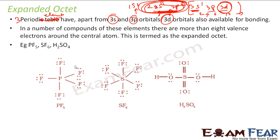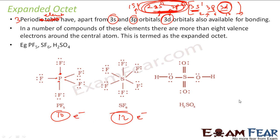For example, PF5 has 5 × 2 = 10 electrons on the phosphorus central atom, and it is happy with that — its configuration is 3s2, 3p3, using d orbitals. SF6 has 6 × 2 = 12 electrons on sulfur, and it is stable. H2SO4 also has 12 electrons on the central sulfur atom. These are all cases of the expanded octet. For the second period, the Lewis structure works perfectly fine, but for the third period with d orbitals, we have expanded octet — 8 electrons may not satisfy the atom.